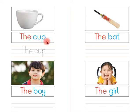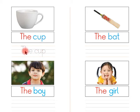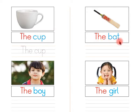Say again, children: the cup. Say one more time, children: the cup. Children, now you have to trace 'the cup' here in between these four lines. Look at this, children: the bat.